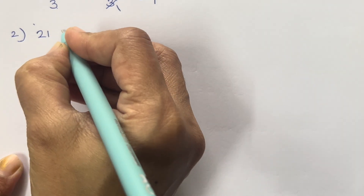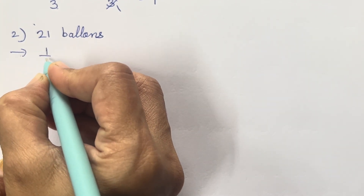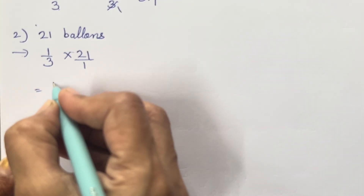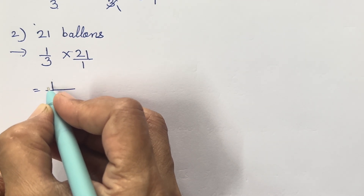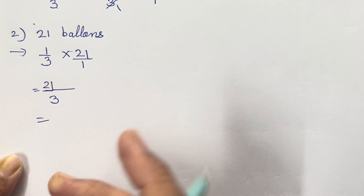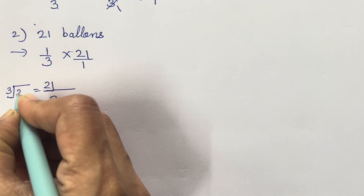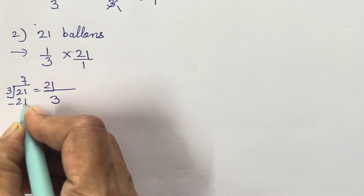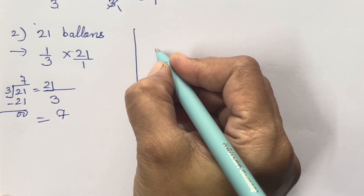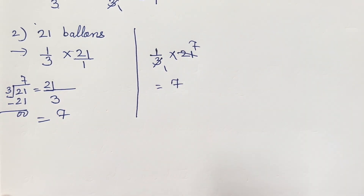Second one is 21 balloons. So 1/3 multiplied with 21: 21 into 1 is 21, and 3 into 1 is 3. Divide — 3 sevens are 21, so your answer is 7. Using the second method: 3 ones are 3, 3 sevens are 21, so your answer is 7.